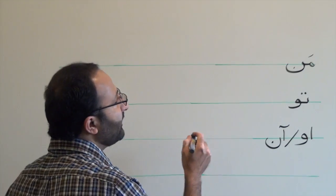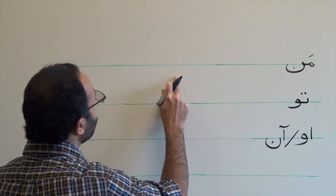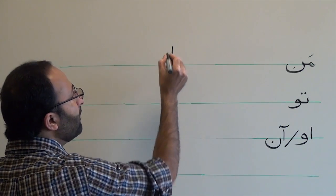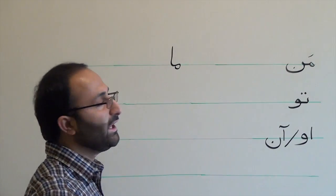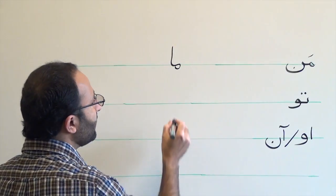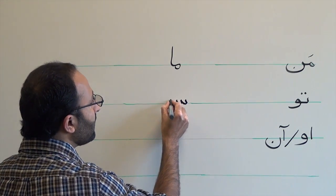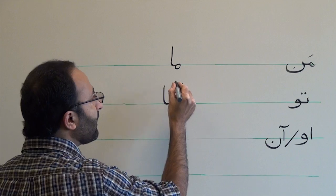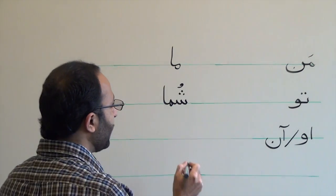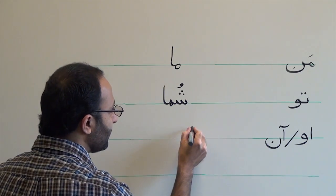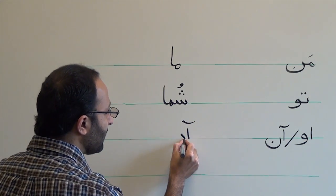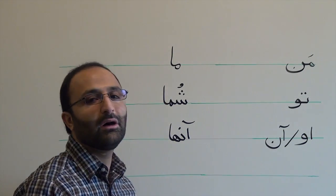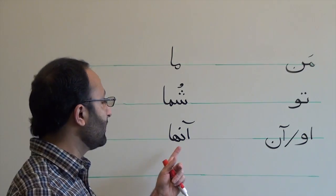The plural group starts with ma, meaning we. Shoma means you, plural. And anha means they.